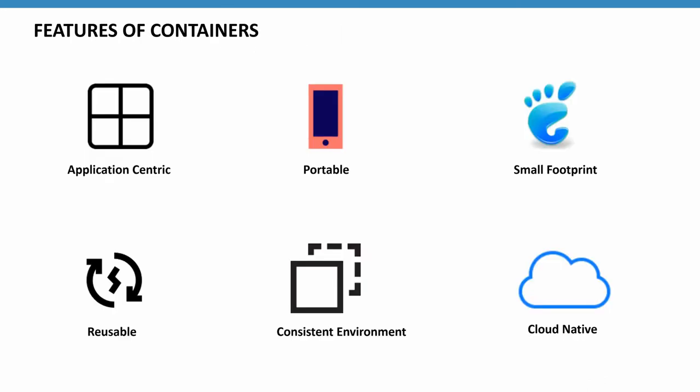Key container features: containers are application-centric and the DevOps team has full control over them. Containers are portable across multiple clouds and on-premise. Containers have a small footprint because they do not hold the complete operating system. They are also reusable — you can create a container once and reuse it across multiple environments. For example, you can create a Tomcat container as a base image and other teams can add enhancements to it without touching the core base image.